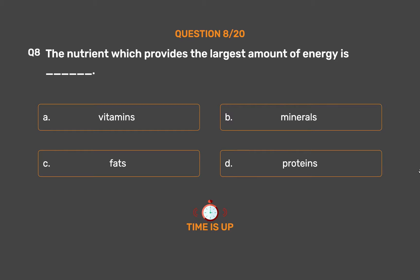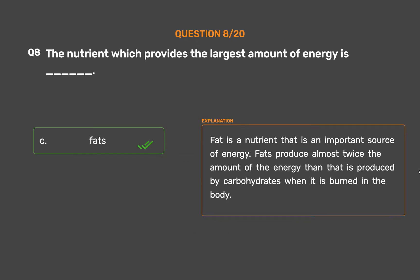The correct answer is Option C - Fats. Fat is a nutrient that is an important source of energy. Fats produce almost twice the amount of energy than that produced by carbohydrates when burned in the body.